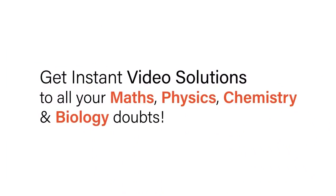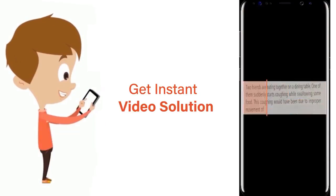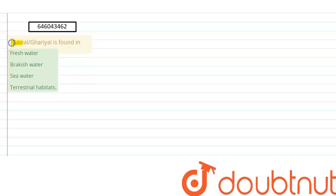With Doubtnet, get instant video solutions to all your maths, physics, chemistry and biology doubts. Just click the image of the question, crop the question and get instant video solution. Download Doubtnet app today. Hello students, the question is: Gavial or Gharial is found in